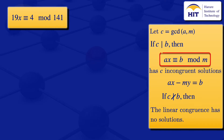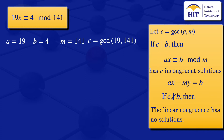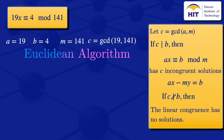Looking at the first linear congruence, 19x ≡ 4 mod 141, we compare it with the standard form and see that a = 19, b = 4, m = 141. Our c is the greatest common divisor of a and m, so c is the greatest common divisor of 19 and 141. To find this, I'll use the Euclidean algorithm.